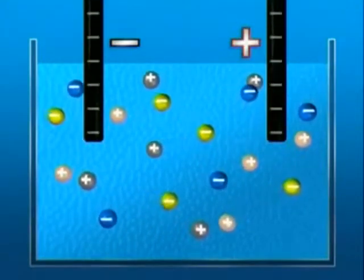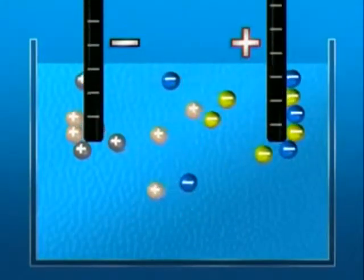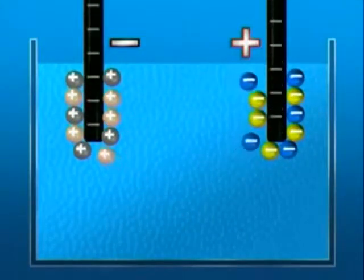Once the power supply is switched on, the positive ions are attracted to the negative electrode. The negative ions move towards the positive.